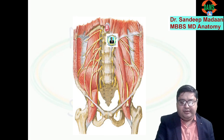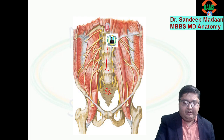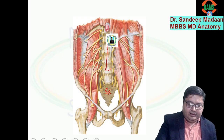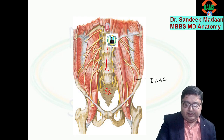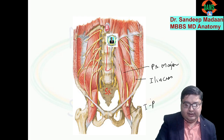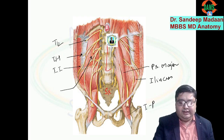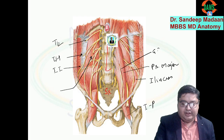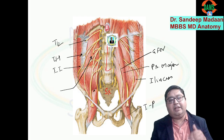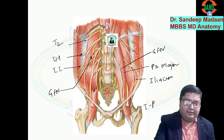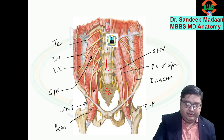Here we can quickly revise this part. This is the sacrum and these are the lumbar vertebrae. We have the iliacus muscle and by the side of the vertebrae the psoas major; together they form iliopsoas. The nerves are: T12 subcostal, iliohypogastric, ilioinguinal. One nerve is cut here — the genitofemoral nerve, which pierces the psoas major. When we cut the muscle, the nerve was also cut. That is the genitofemoral nerve. This is the nerve of meralgia — lateral cutaneous nerve of thigh. This thick nerve is the femoral nerve, and the one passing through the obturator foramen is the obturator nerve.